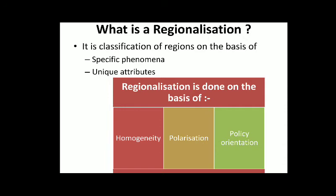The next basis is polarization. Polarization means examining a particular urban place and its surrounding region — the nodality of that center. The surrounding region is completely different from that particular center, so that is called polarization. The next is policy orientation. Policy orientation means on the basis of administrative coherence or administrative mechanism — a region in which a different type of policy can be implemented. That is called a policy-oriented region.